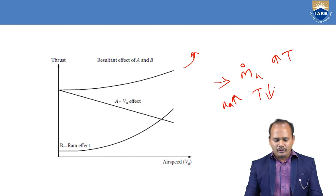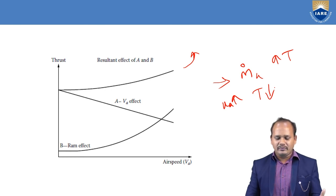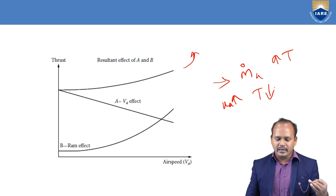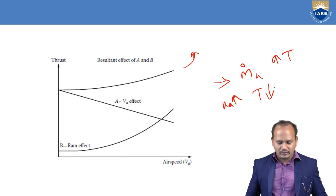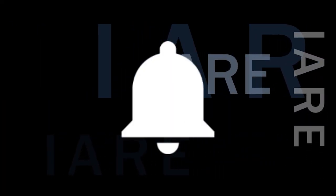These are the different parameters that affect the thrust generated by an aircraft engine: nozzle characteristics, airspeed, mass flow rate, altitude, and ram effect. With this, I will finish today's lecture. Like, share and subscribe, and hit the bell icon for more updates.